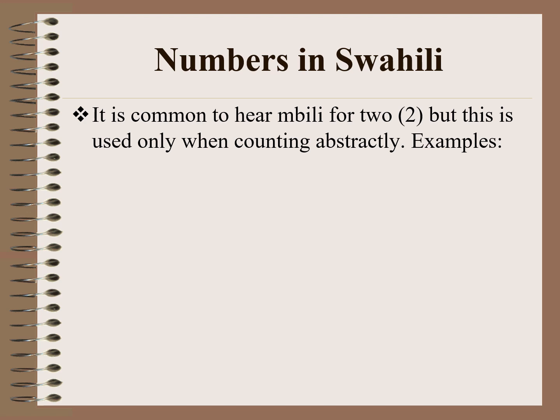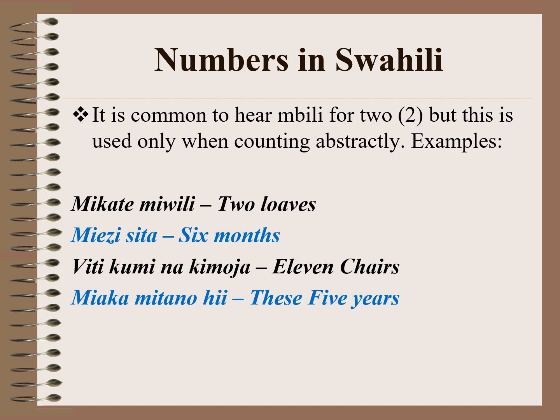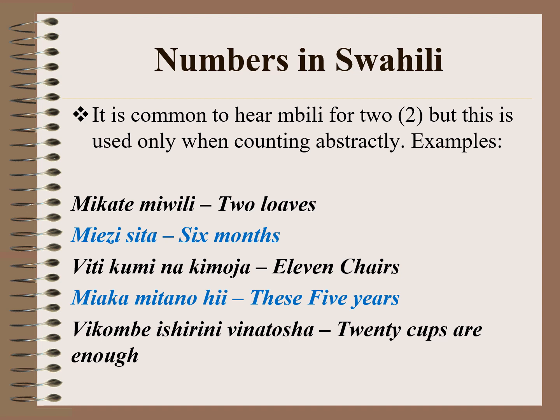It is common to hear mbili for two, but this is used only when counting abstractly. For example, Mikate miwili means two loaves — you cannot say Mikate mbili, it is Mikate miwili. Miezi sita means 6 months. Viti kuminakimoja means 11 chairs — ki is referring to viti, so kimoja is one. Miaka mitano hii means these five years. Vikombe 20 vinatosha means 20 cups are enough.